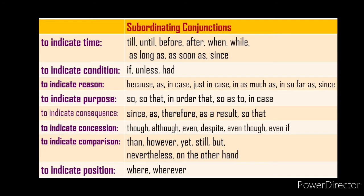Subordinating conjunctions can be classified according to their meaning. Till, until, before, after, when, while, as long as, as soon as, since — used to indicate time. If, unless, had — used to indicate condition. Because, as, in case, just in case, inasmuch as, in so far as, since — used to indicate reason. So, so that, in order that, so as to, in case — used to indicate purpose. Since, as, therefore, as a result, so that — used to indicate consequence.